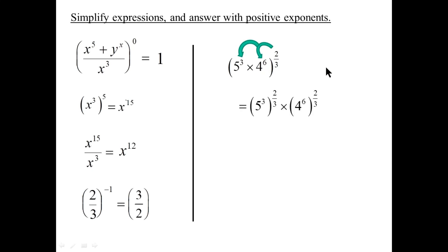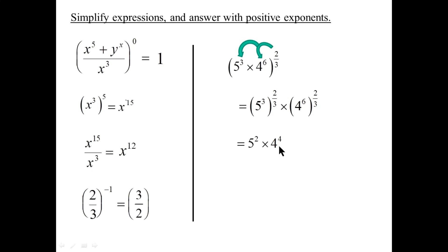We get five to the three to the two-thirds times four to the six to the two-thirds. Because it's multiplied, we multiply the exponents: we get six-thirds which is two, and twelve-thirds which is four — so four to the four. We evaluate separately: five squared is 25, and four to the four is four squared squared — 16 squared is 256. Multiplying gives 6400.